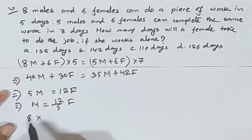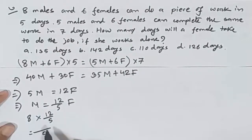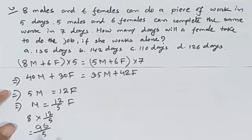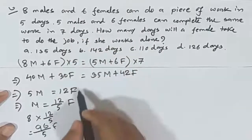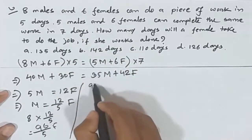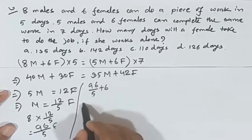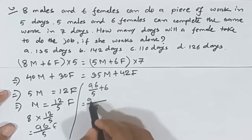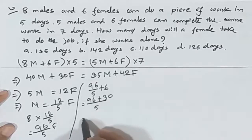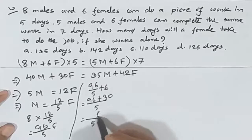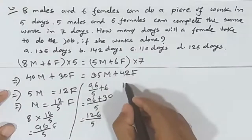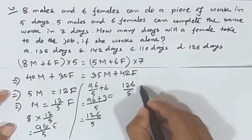8 into male is 12 divided by 5, that is 5 divided by 8 times 6. So 8 male becomes female and that female is 6. We have 96 divided by 5 plus 6 — that is 96 plus 5 is 3, 5, 6, giving 116. So 126 divided by 5 is the female value.